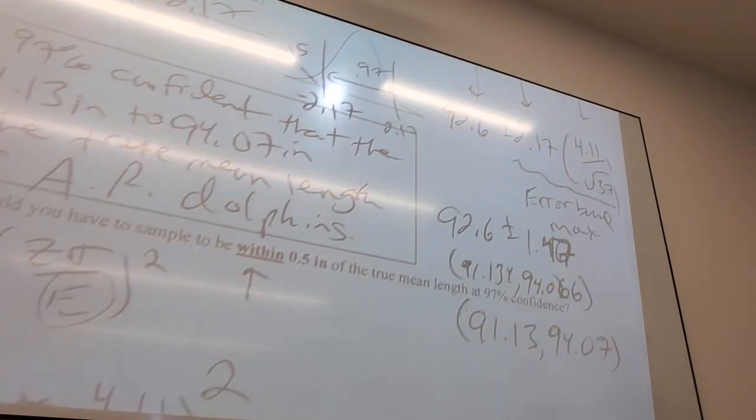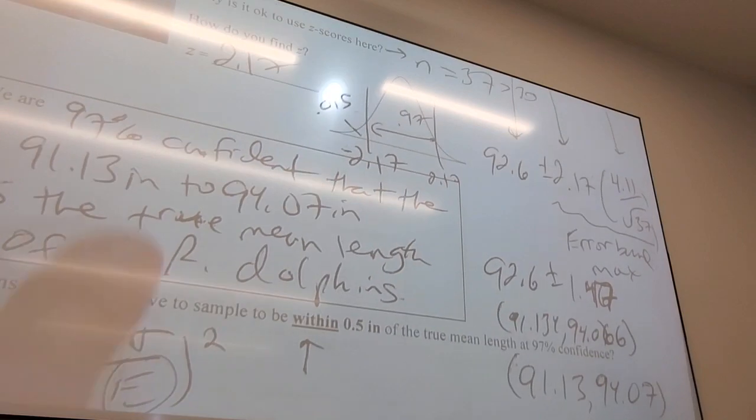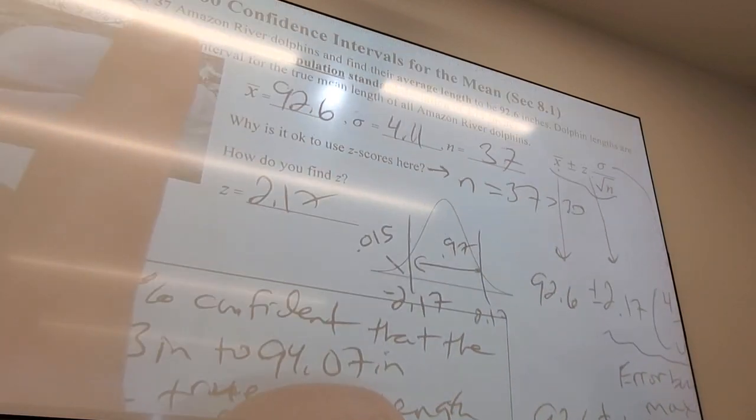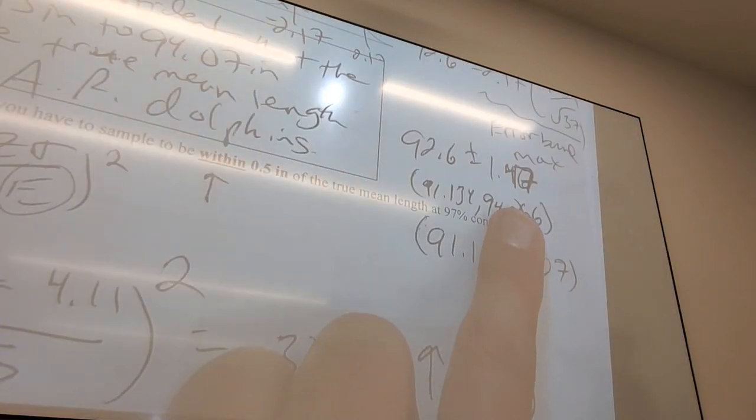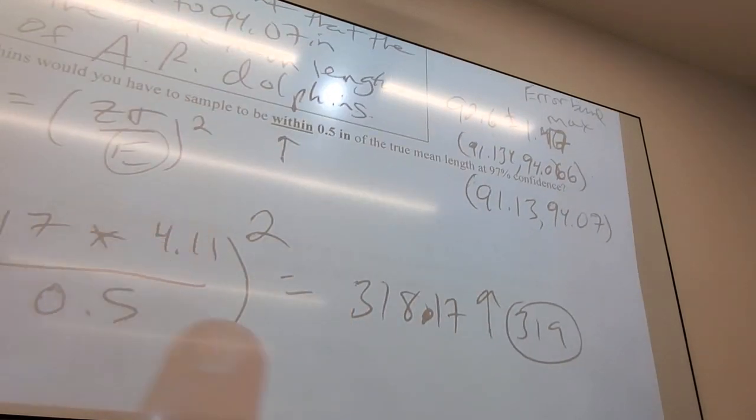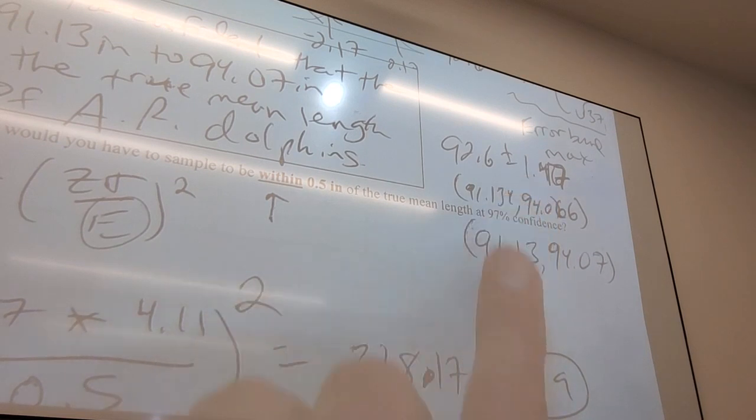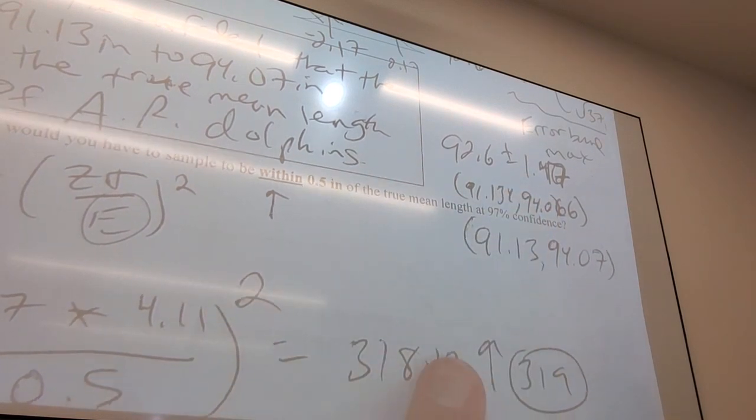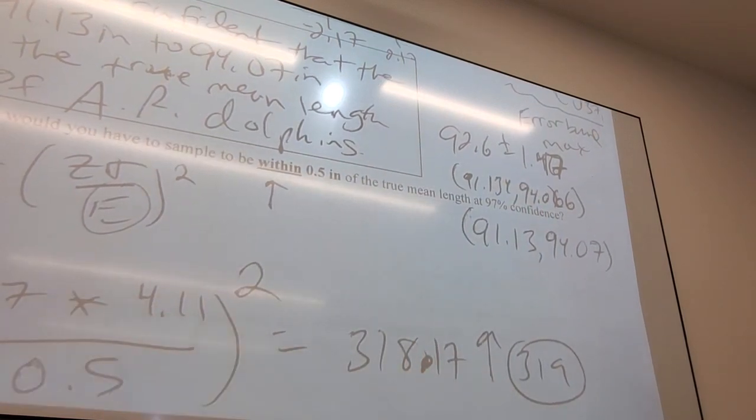I need you to understand: a sample of 37 will lead to an error of 1.47 for this problem. A sample of 319 will lead to an error of 0.5. Now it would actually be about 0.4 something because we rounded up a little bit, but it's within 0.5.